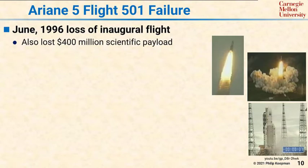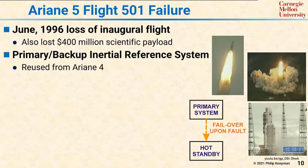The Ariane 5 was designed with a primary-backup pattern for its internal navigation system. There's a primary system, and if the primary system should fail, a hot standby backup would take over. This design was reused from the Ariane 4 rocket so that they would not have to redo the safety certification.